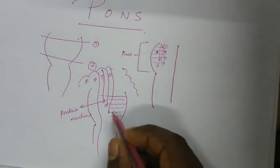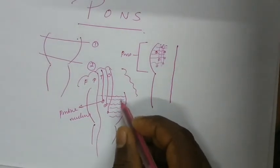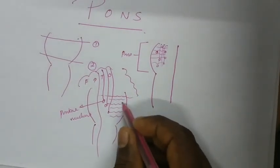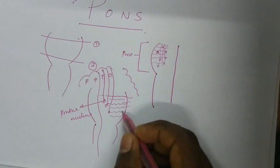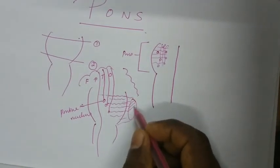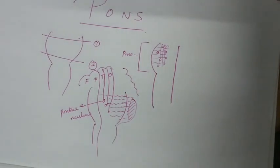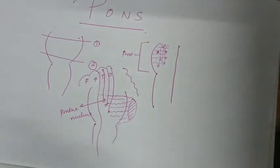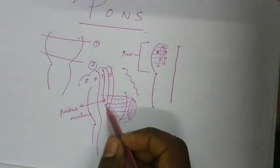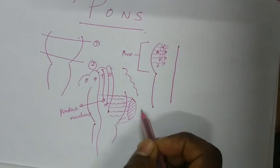The horizontal fibers will be ending in the middle cerebellar peduncles. As already discussed, the middle cerebellar peduncle connects the pons to the cerebellum.